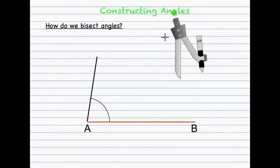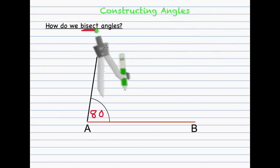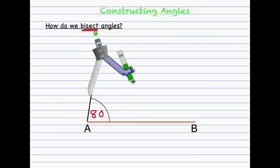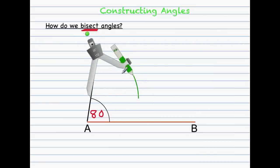Before we get to the other constructions, let me explain what it means to bisect an angle. The word bisect just means to cut something in half. So if I'm bisecting an 80 degree angle, I'll be creating two 40 degree portions. Let me demonstrate how we go about bisecting any angle. Put the tip of the compass to the top part of the angle, open it up a bit, and create an arc halfway between the angle.